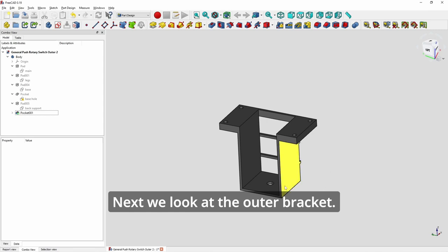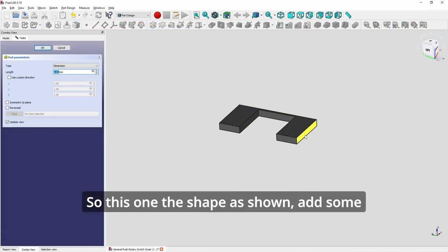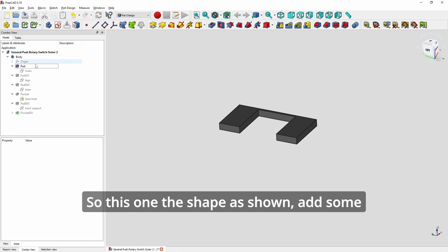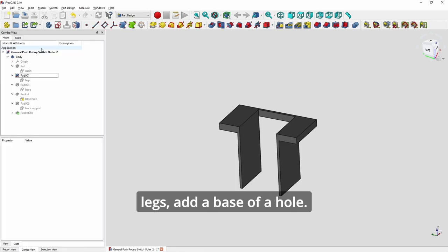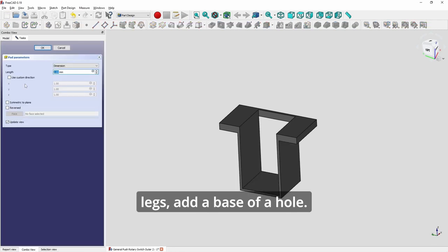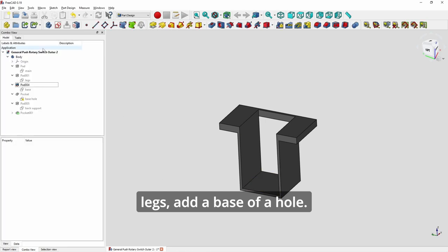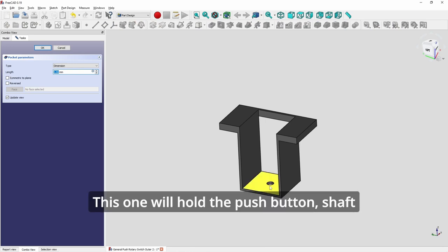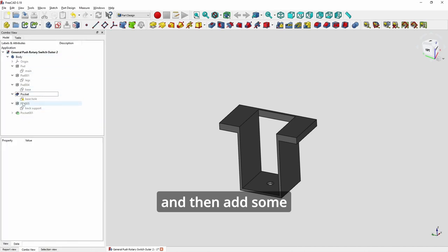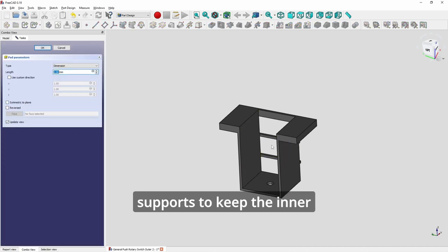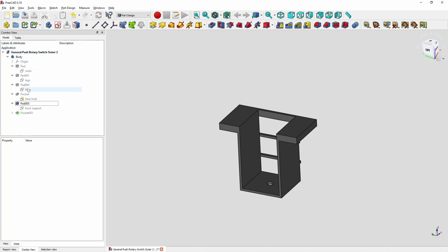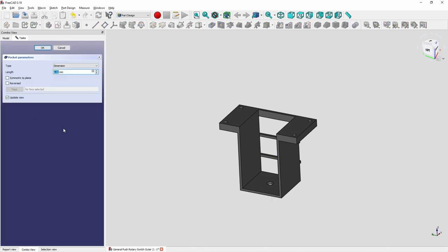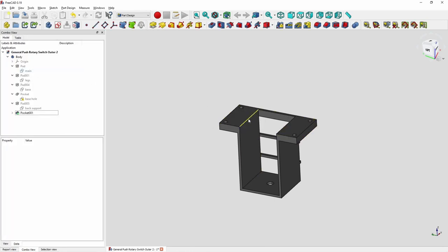Next we look at the outer bracket. This one, the shape as shown, add some legs, add a base, add a hole that will hold the push button shaft. Then add some supports to keep the inner bracket in place. And then add the holes, pocket four holes, and we are done with this build.